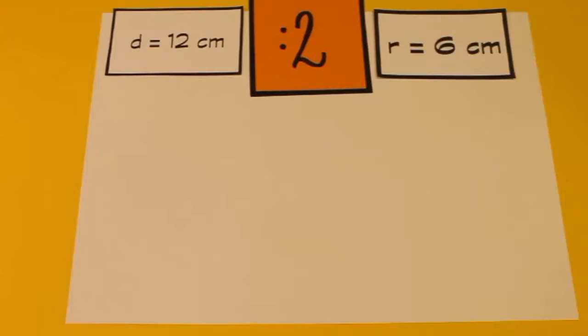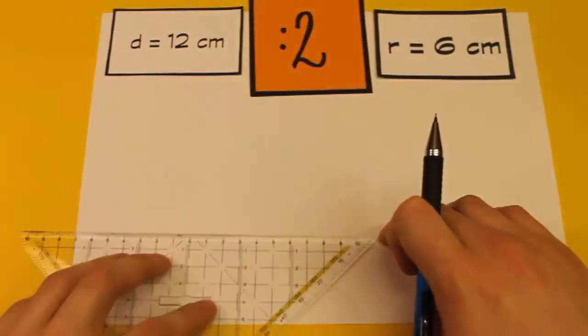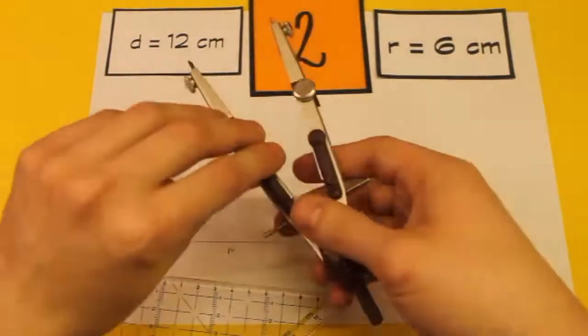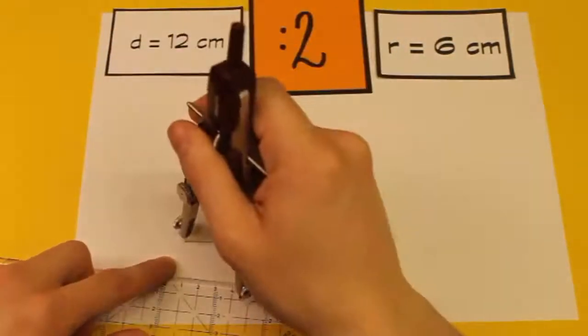Und jetzt können wir den Kreis ganz normal konstruieren, so wie wir das gerade zuvor gemacht haben. Das heißt, ich mache das Ganze jetzt im Schnelldurchlauf, damit ihr nachher gleich selbst loslegen könnt. Wir zeichnen also zuerst wieder die Hilfslinie, die so lange ist wie der Radius. Zweitens, wir nehmen diesen Abstand in den Zirkel.